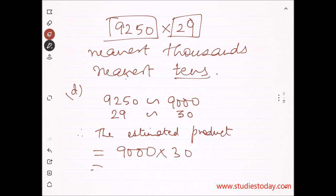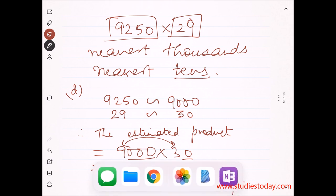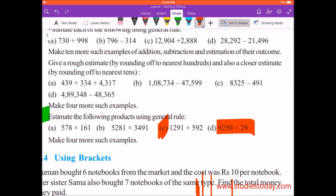Therefore, the estimated product is 9,000 into 30. Count the zeros - 1, 2, 3, 4 - and then 9 into 3 is 27. So the answer is 2 lakh 70,000. We have done all the parts of this question. You can make four more such examples so your concepts are crystal clear.